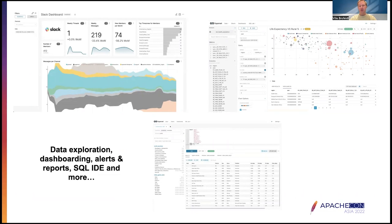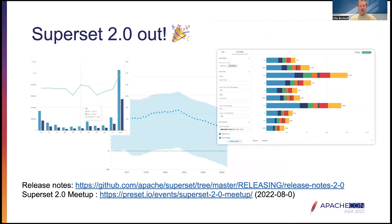Many advanced features like row-level security, alerts and reports, and custom chart plugin support are available. Superset development has been very active lately. Just a few weeks ago, Superset 2.0 was released, which is a huge step forward in terms of user experience and stability. Preset is organizing a meetup on Superset 2.0 next week, so to hear more about the new release, please check out the link in the slide.